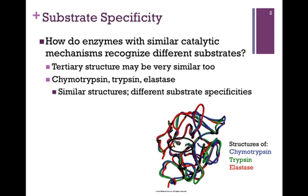Those active site residues are highlighted by the black oval, and as you can see, they practically overlap one another. So, practically identical tertiary structure and the same catalytic mechanism, and yet they recognize different substrates.